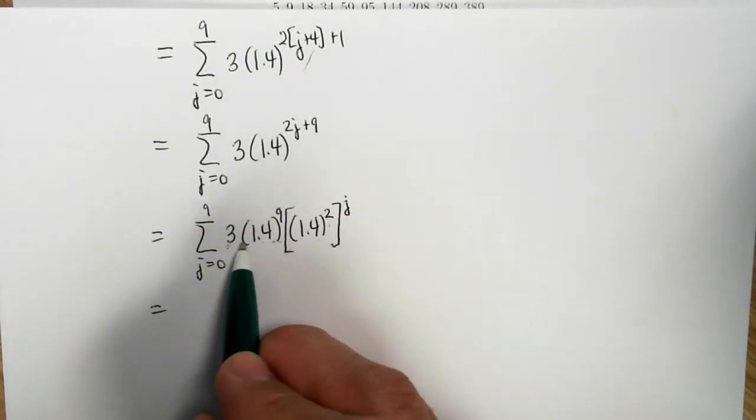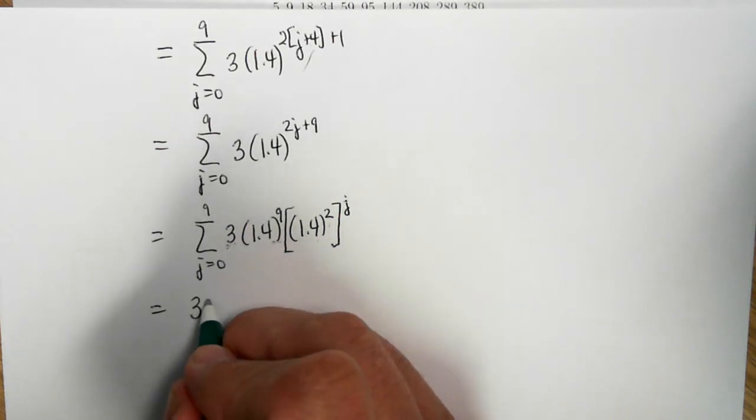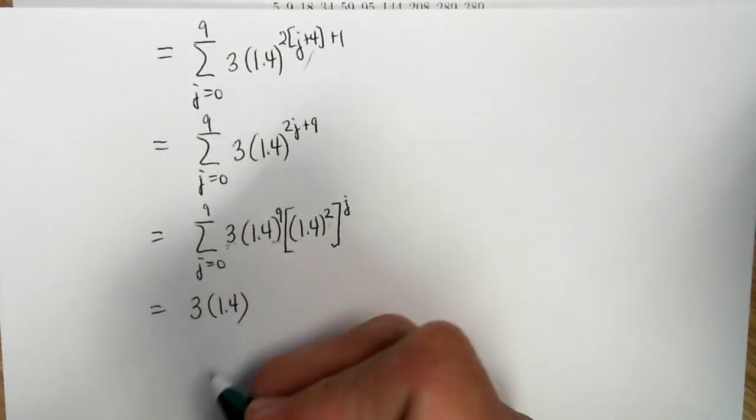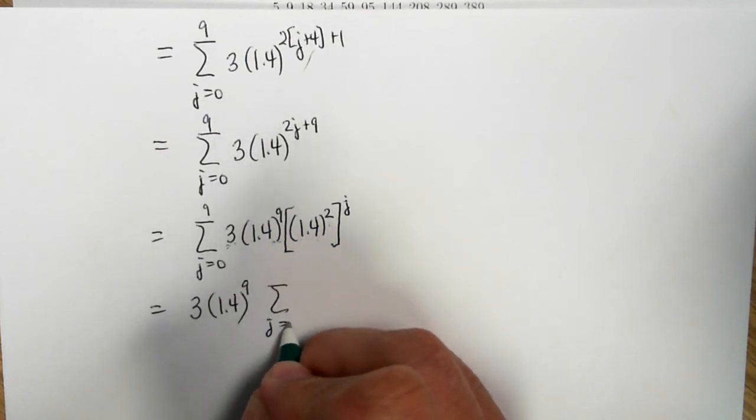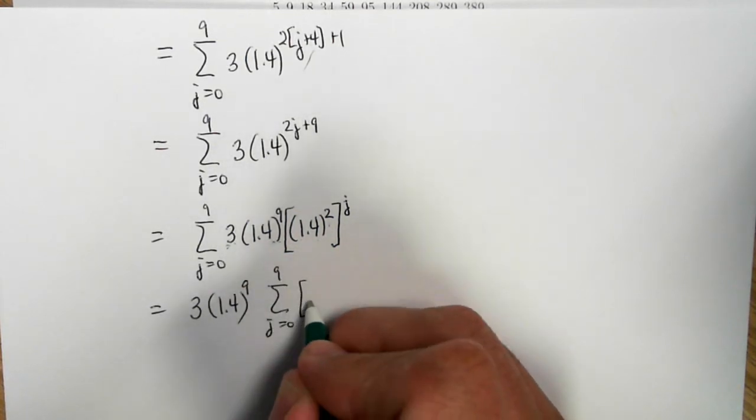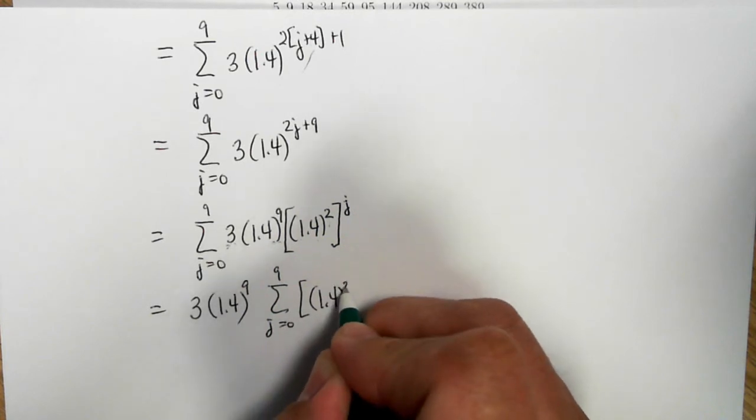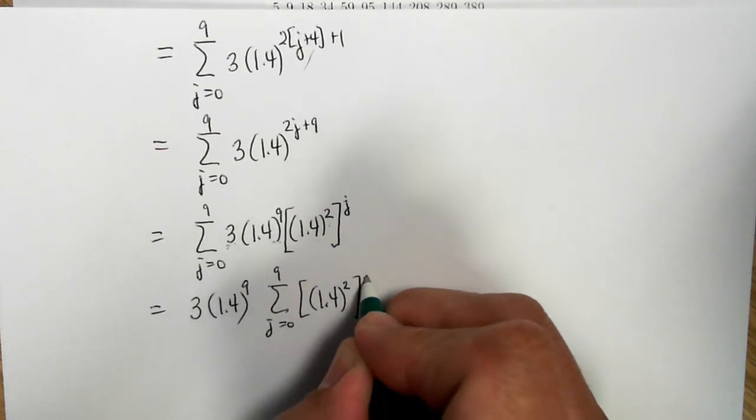Now, there are no j's inside of this, so that can be factored outside of the summation, 3 times 1.4 to the 9, summation j equals 0 to 9 of 1.4 squared to the j power.